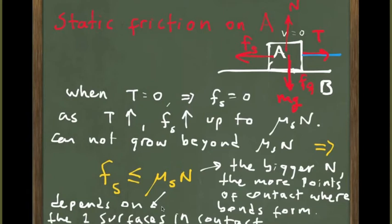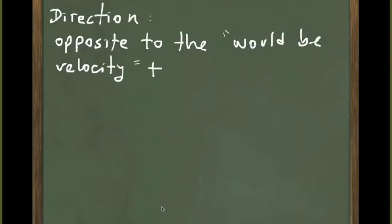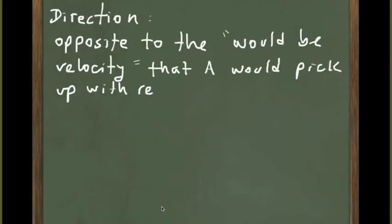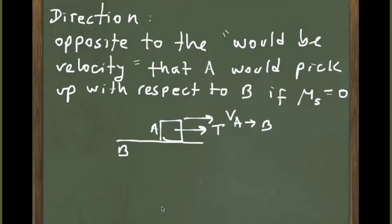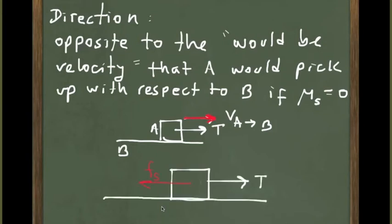For example, the coefficient of static friction between rubber and cement might be about 0.8, and between cement and cement might be 0.5 — it depends on the particular surfaces in contact. The direction of static friction is always opposite to the would-be velocity that object A would have with respect to B if there were no friction. So if without friction object A would move to the right relative to B, the static friction acts to the left — opposite to the direction A would move with respect to B if there were no friction.